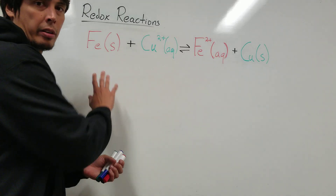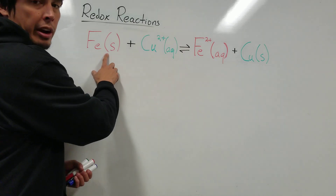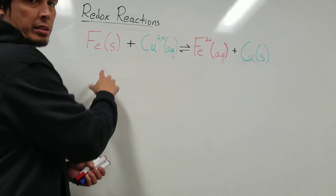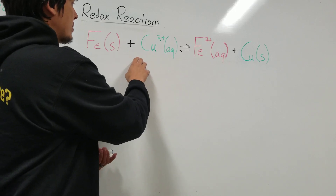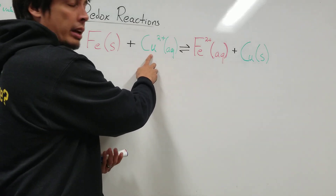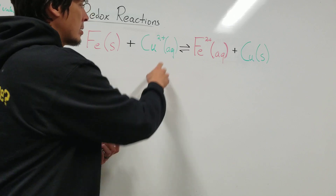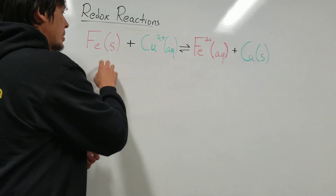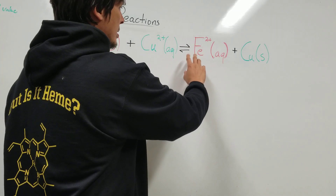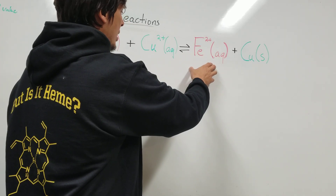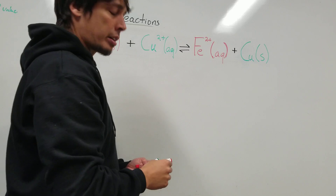On the board here is a simple redox reaction where on the reactant side we have iron metal — the 's' in parentheses indicates it is solid — and this is transferring electrons to a copper 2 cation in aqueous solution, indicated by 'aq'. On the product side, the iron metal loses electrons to form iron 2 in aqueous solution, and copper metal is formed as a product.